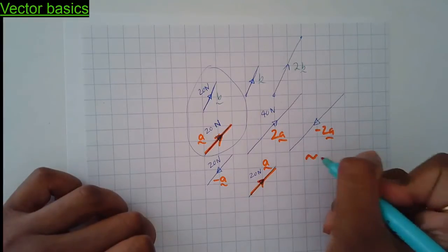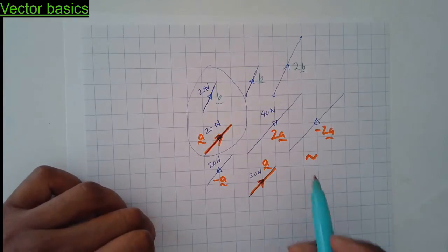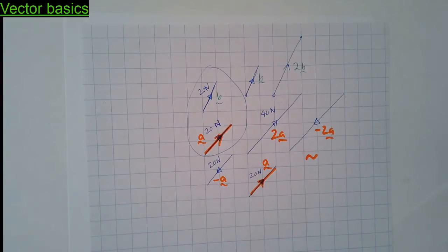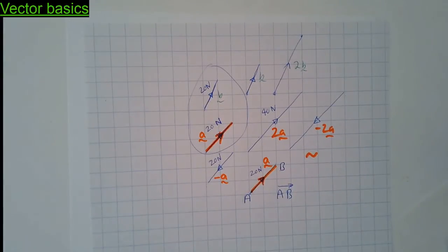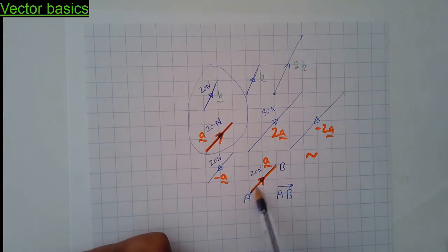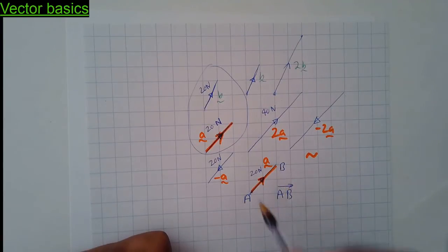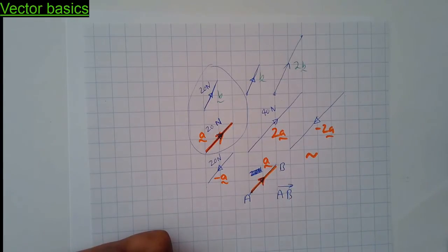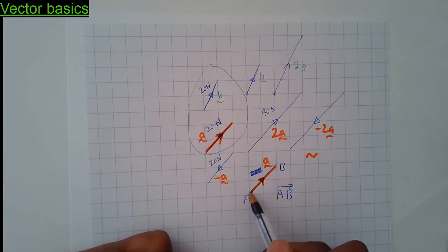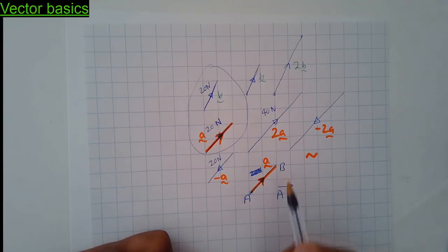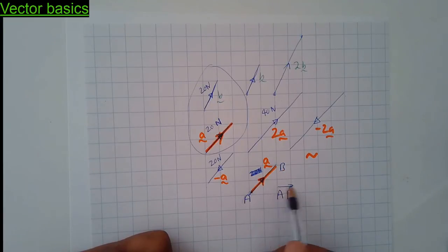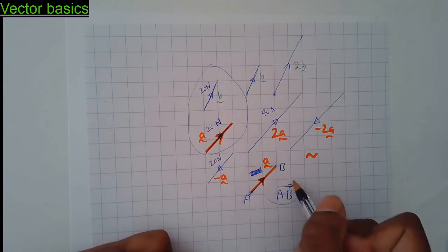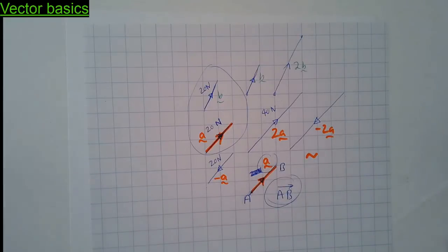The symbol for vectors is an underline — written like that — to indicate it represents a vector. There's another way to represent vectors using arrow notation: if the arrow starts at point A and finishes at point B, we write it as AB with an arrow on top, meaning we start at A, follow the arrow, and finish at B.